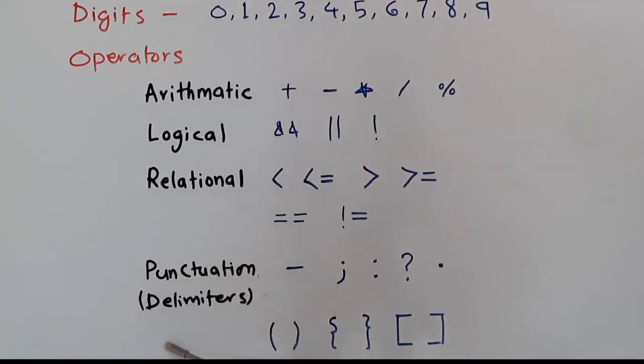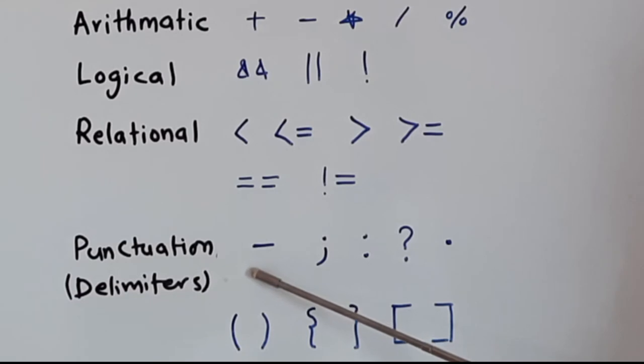Let us see the punctuation marks or delimiters. We have a dash, semicolon, colon, question mark, full stop, and round brackets—opening and closing brackets. Then we have curly brackets or curly braces: opening and closing braces. We can use these punctuation marks. All these letters, digits, and operators can be found on your computer's keyboard, so we can use all of them when typing a Java program.